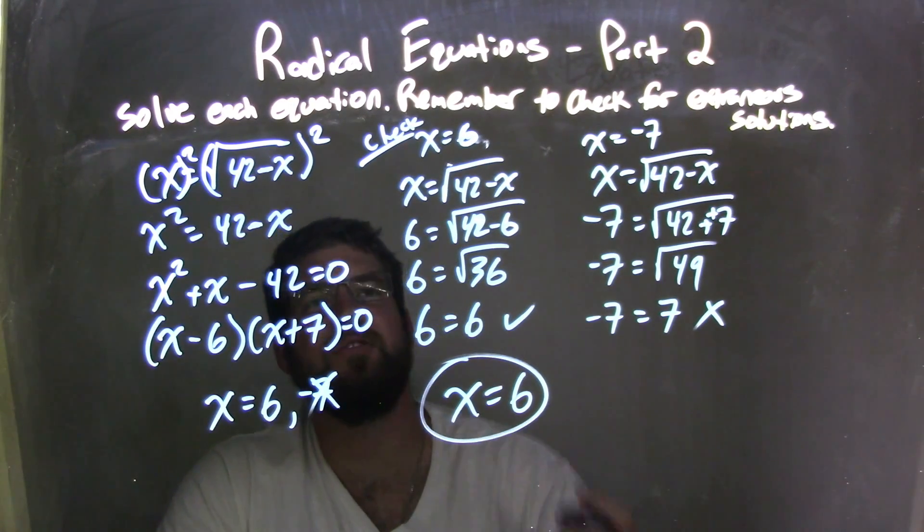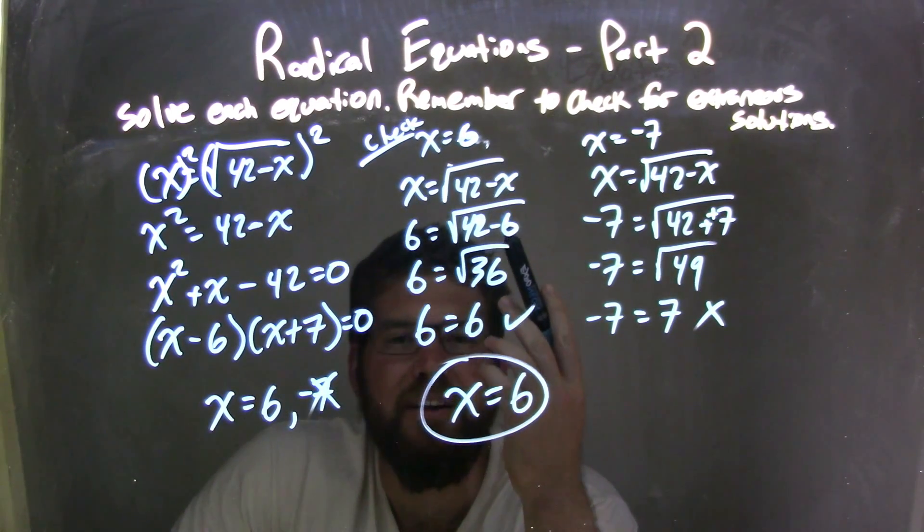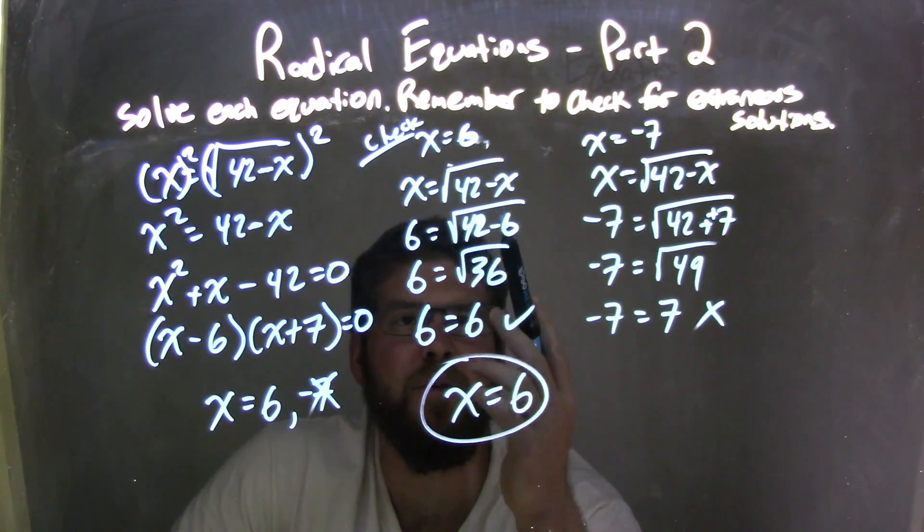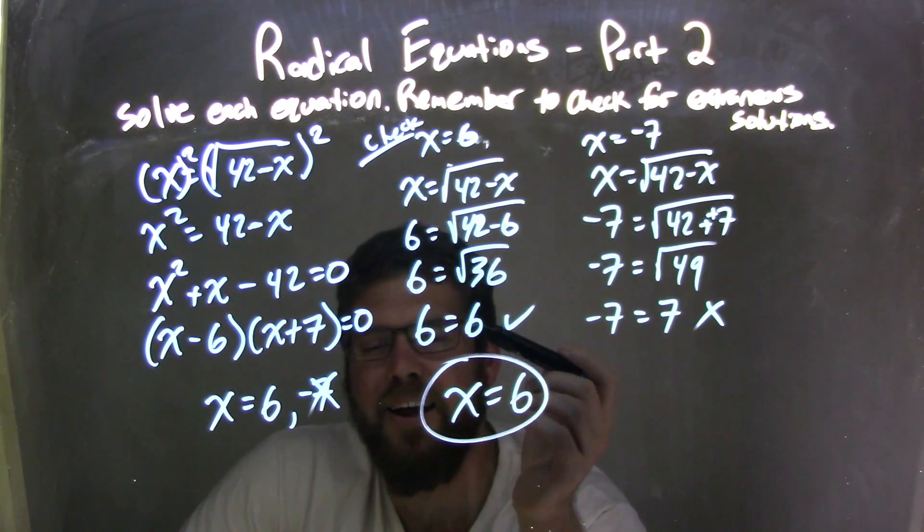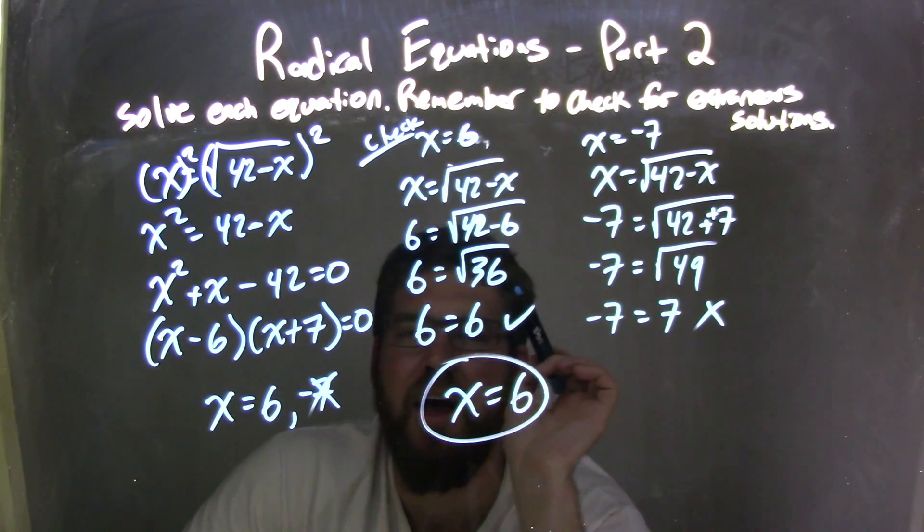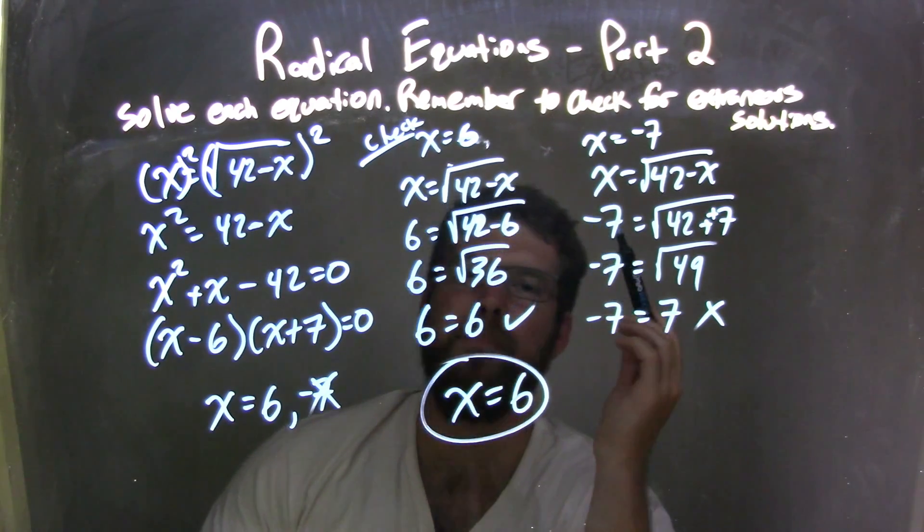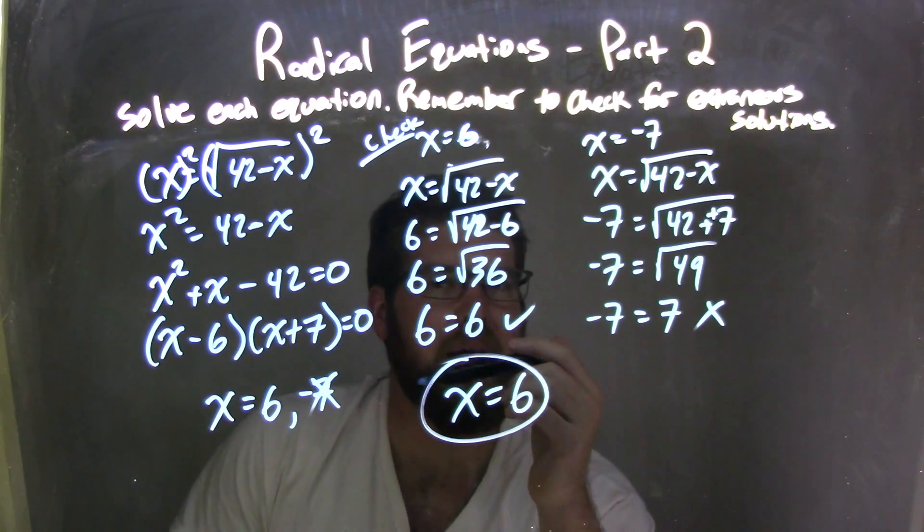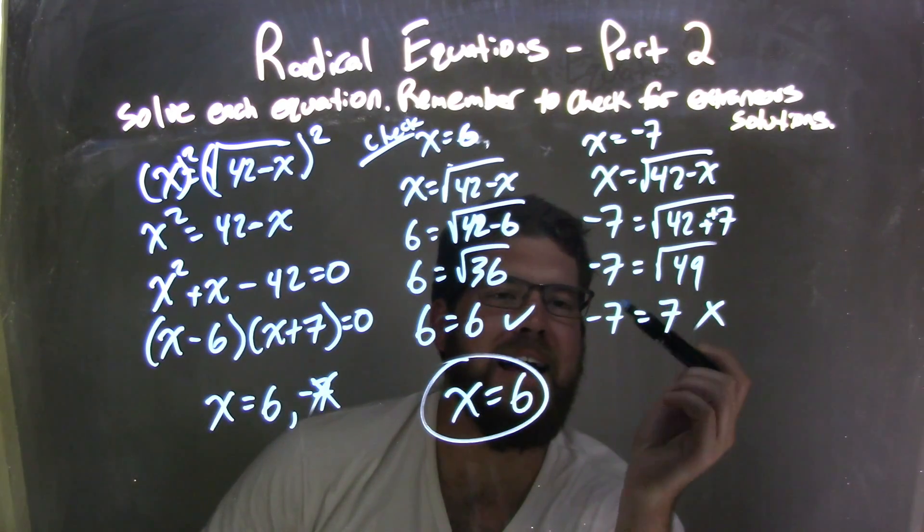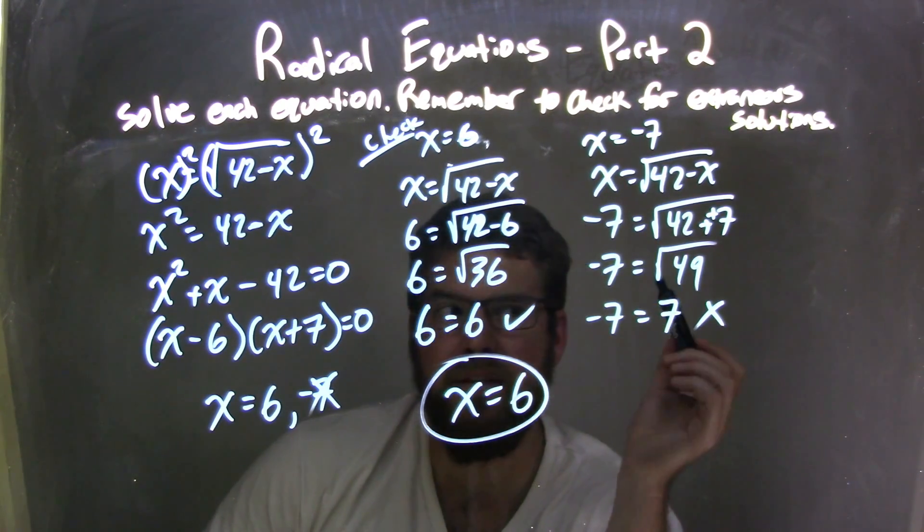I had to check for extraneous solutions. Plugging 6 into my original equation, I ended up with 6 equals 6—a true statement. But when I plugged in negative 7, I got negative 7 equals positive 7.